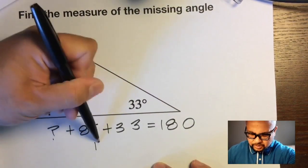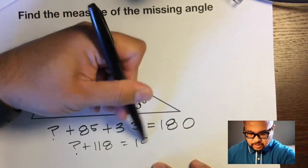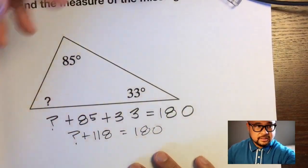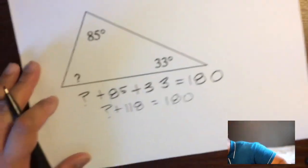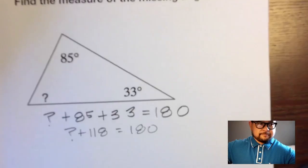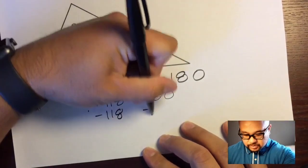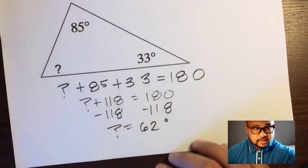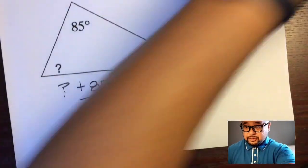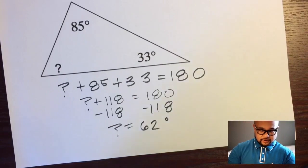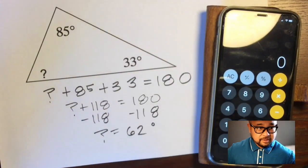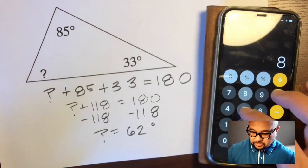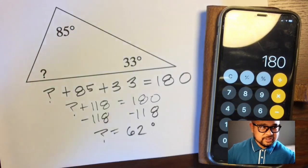They always add up to 180 degrees. 85 plus 33 is 118, so 118 plus question mark equals 180. We subtract 118 from both sides, and the question mark is 62 degrees. How do we check that? We plug it back in: 62 plus 85 plus 33 is 180 degrees. That's how we know we are correct.